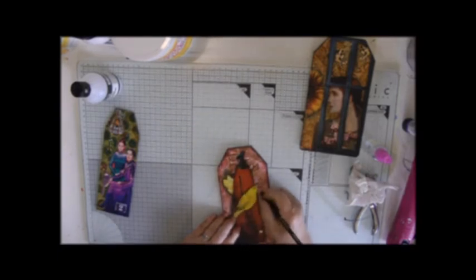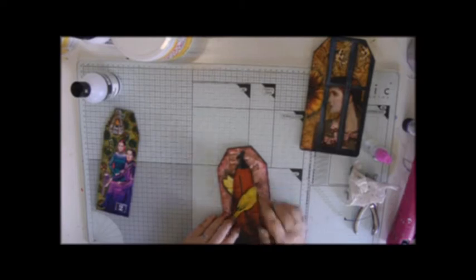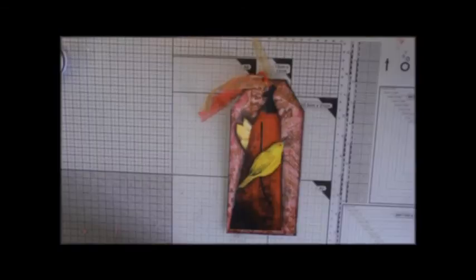And then, as I did with the others, I Stabiloed all round the edges and the collage and added some ribbon. That was my fourth tag. So there are now some close-ups coming.